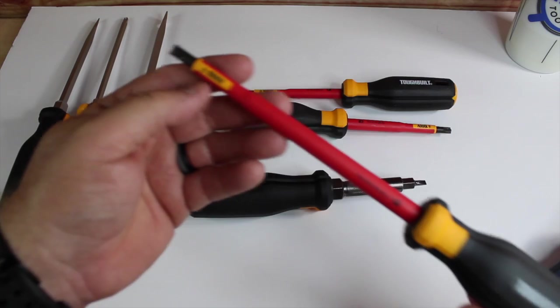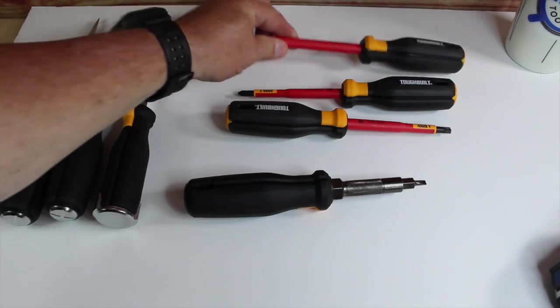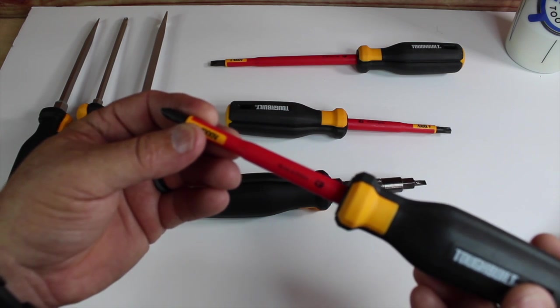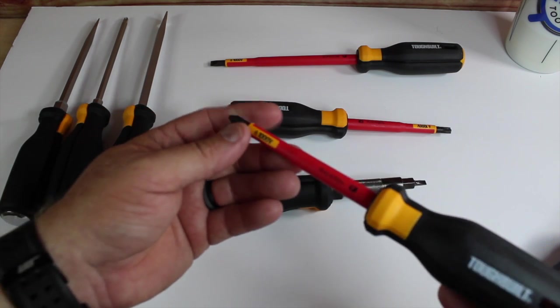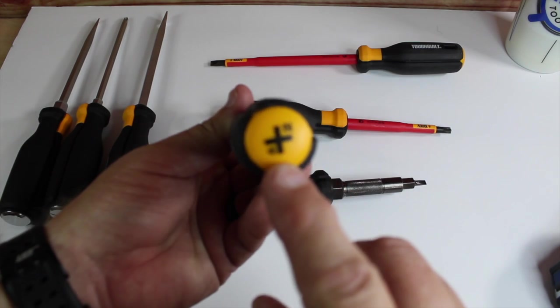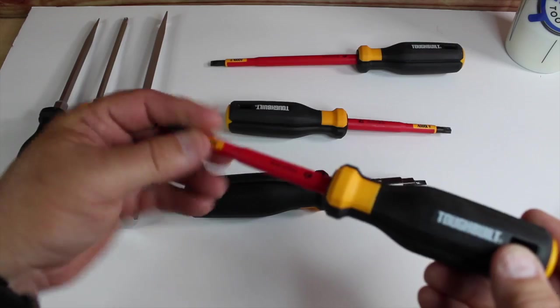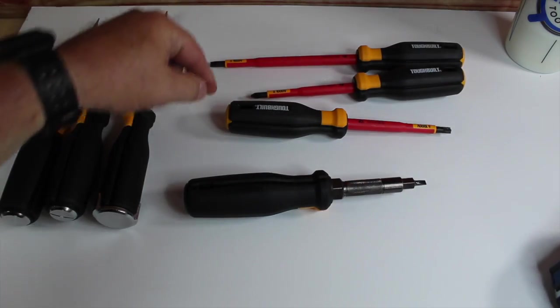And of course it shows you 1/4 inch slotted on the end of the handle—thousand-volt rating, which is really cool. And this is TBH5NPH2X4—thousand-volt—and it shows you Phillips number two. That's pretty cool. But like I said, they're shorter. You can see how much shorter that one is.